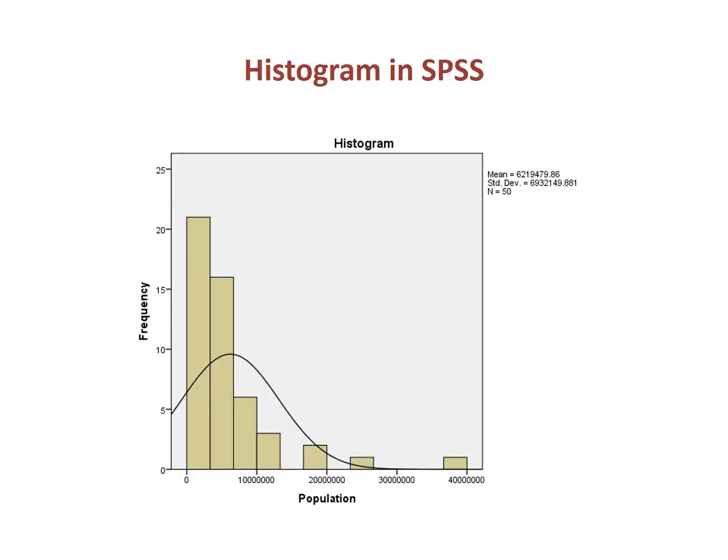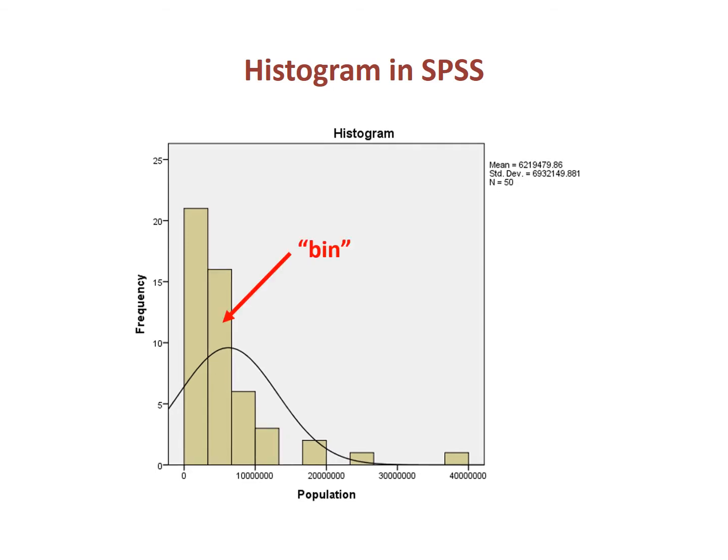The histogram provides a visual test for normality. Here is an example of a histogram from SPSS, a leading software package, using the variable population from our state-level dataset. To create a histogram, the distance between the minimum and maximum values is split into segments of equal length, and the frequency of each segment is determined. The frequencies are visually represented in boxes, which are referred to as bins.